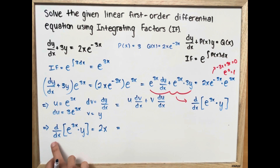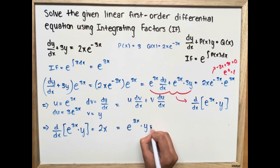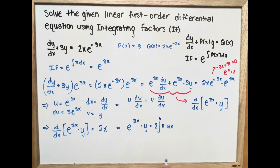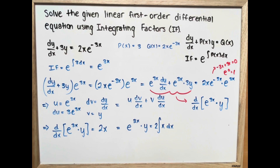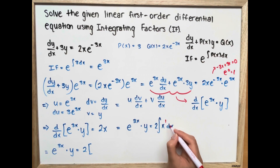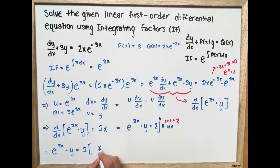Now we bring the d/dx to the right side. Our equation becomes e to the 3x times y, equal to the integral of 2x dx. Taking the integral: since the exponent on x is 1, we add 1 to get 2, giving us 2 times x squared divided by 2, plus C, which simplifies to x squared plus C.